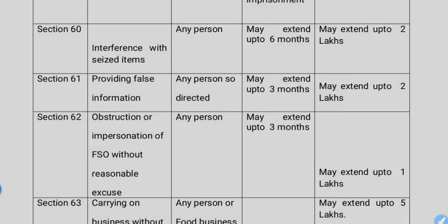Section 60 covers interference with seized items. If a food safety officer has seized your product and you interfere with those seized items, that is a punishable offense.